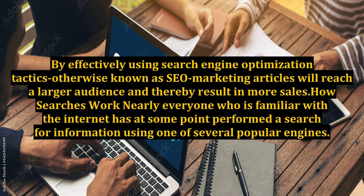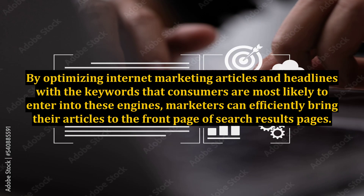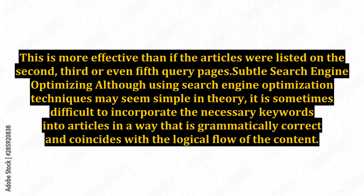How searches work. Nearly everyone who is familiar with the internet has at some point performed a search for information using one of several popular engines. However, average consumers generally do not question how or why particular articles are listed before others. By optimizing internet marketing articles and headlines with the keywords that consumers are most likely to enter into these engines, marketers can efficiently bring their articles to the front page of search results pages. This is more effective than if the articles were listed on the second, third, or even fifth query pages.